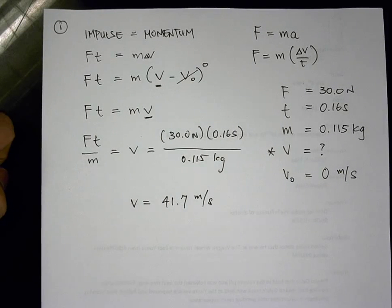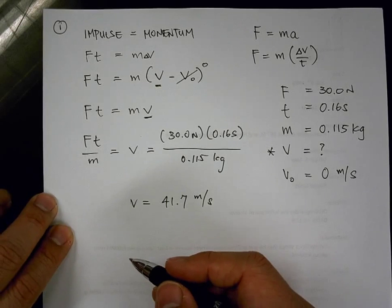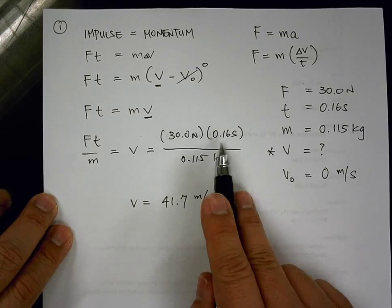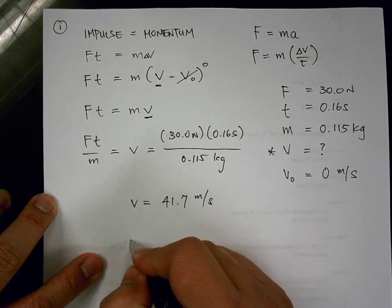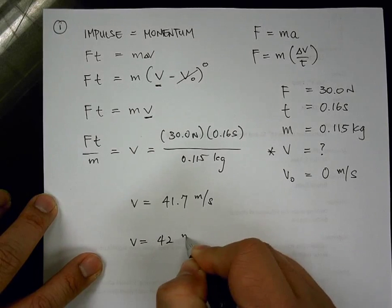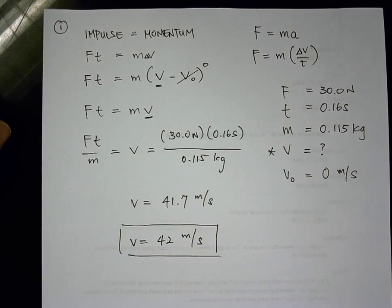Is that correct? Yes. And then after you do the rounding, you should round it to how many significant digits? Two. Two significant digits. And why two significant digits? Because of the 0.16. And 0.16 has two significant digits, so therefore, the answer rounds to 42 meter per second as the speed of this hockey puck. So far so good? Are there any questions?